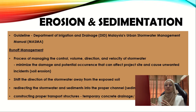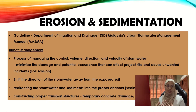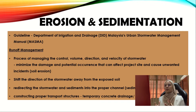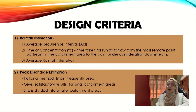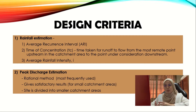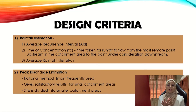Runoff management helps by shifting the direction of stormwater and sediments away from exposed soil by redirecting it into proper channels, such as sediment basins or silt traps. This is done by constructing proper transport structures such as temporary concrete drainage or by improvising earth drainage. For the design criteria, there are five considerations. The first is rainfall estimation, which includes average recurrence interval, time of concentration — the time taken for runoff to flow from the most remote upstream point to the point under consideration downstream — and average rainfall intensity.